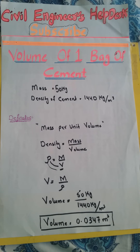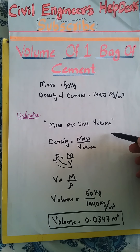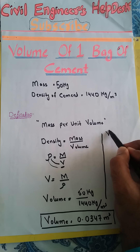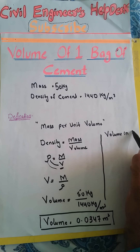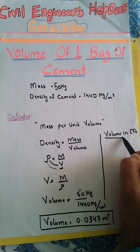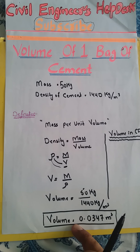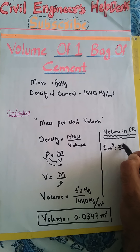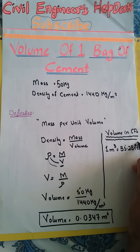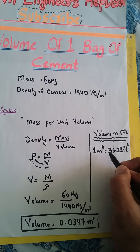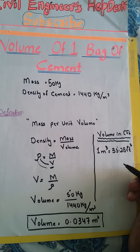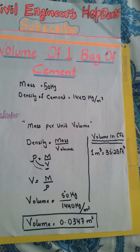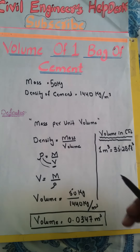The volume of one cement bag is 0.0347 cubic meters. But we must also know the volume of one cement bag in cubic feet. We just convert this cubic meter volume into cubic feet. We know that one cubic meter is equal to 35.28 cubic feet, so if we multiply 0.0347 by 35.28, we will get the volume in cubic feet.